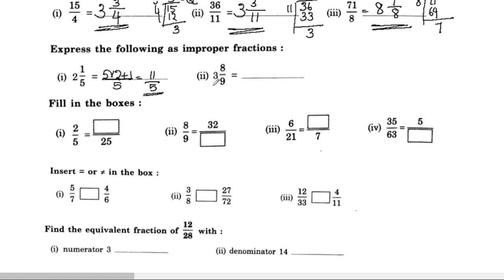For 3 and 8 by 9: 9 into 3 is 27, and 27 plus 8 is 35. The denominator stays the same. So the improper fraction is 35 by 9.